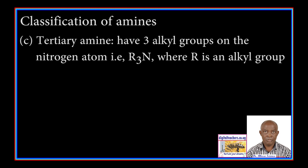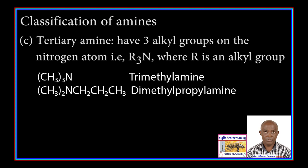C. Tertiary amines have three alkyl groups bonded to the nitrogen atom, that is R3N, where R is an alkyl group. For example, trimethylamine and dimethylpropylamine.